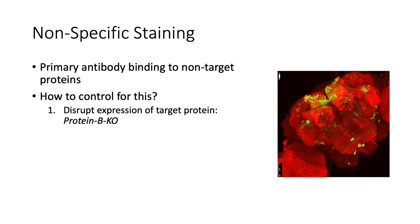In order to discard the possibility of non-specific staining, one could disrupt the expression of the target protein by use of different genetic tools, such as introduction of genetic mutations. So, in this example, let's say we're knocking out protein B by means of a genetic mutation.